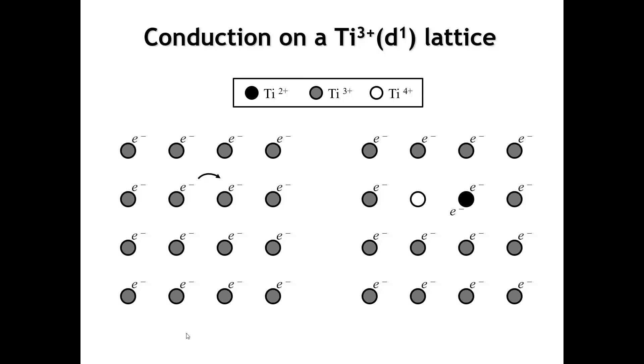If we think about a square lattice of titanium 3-plus ions, each having one d-electron, let's turn on conductivity. For conductivity to happen, an electron has to move from one titanium atom to another.